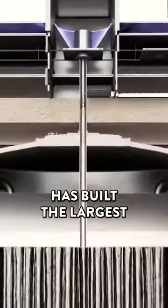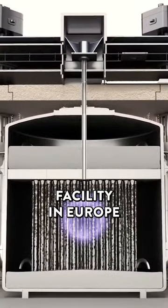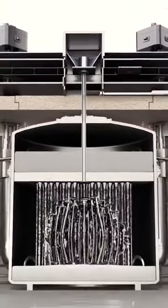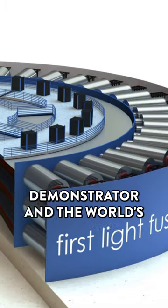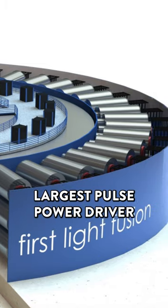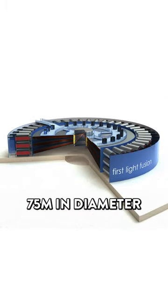The company, Firstlight, has built the largest pulse power facility in Europe they call Machine 3, however they already have plans for Machine 4 which will be their gain demonstrator and the world's largest pulse power driver at approximately 75 meters in diameter.